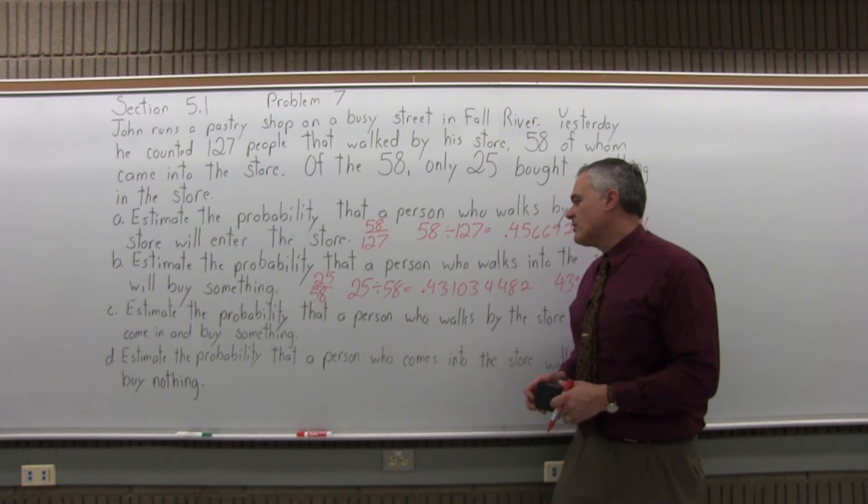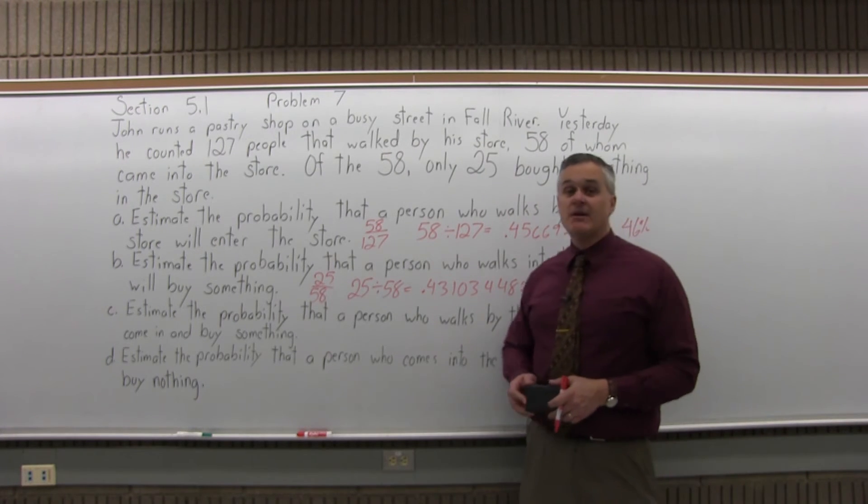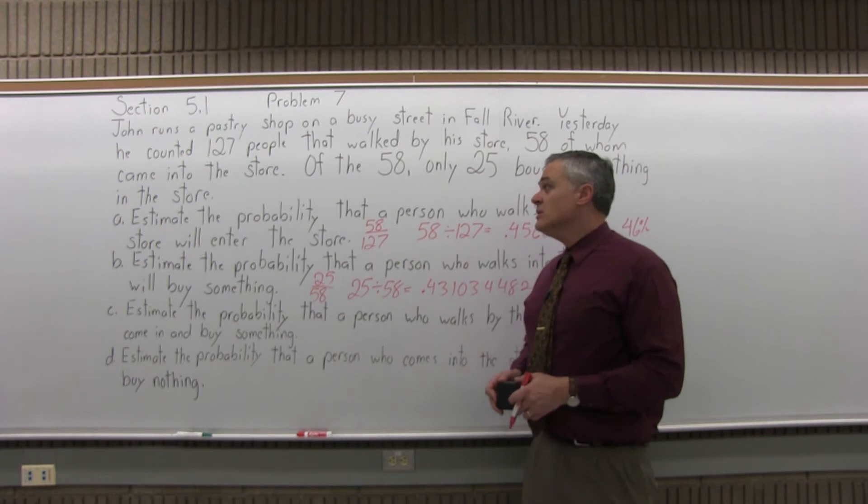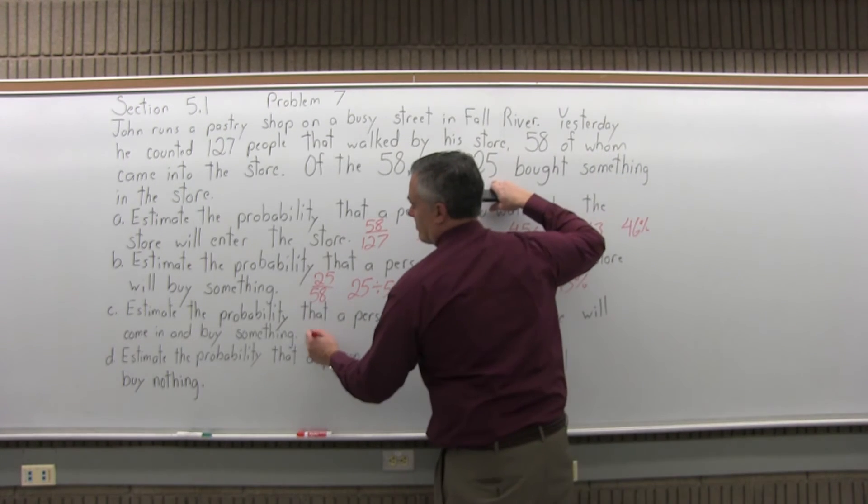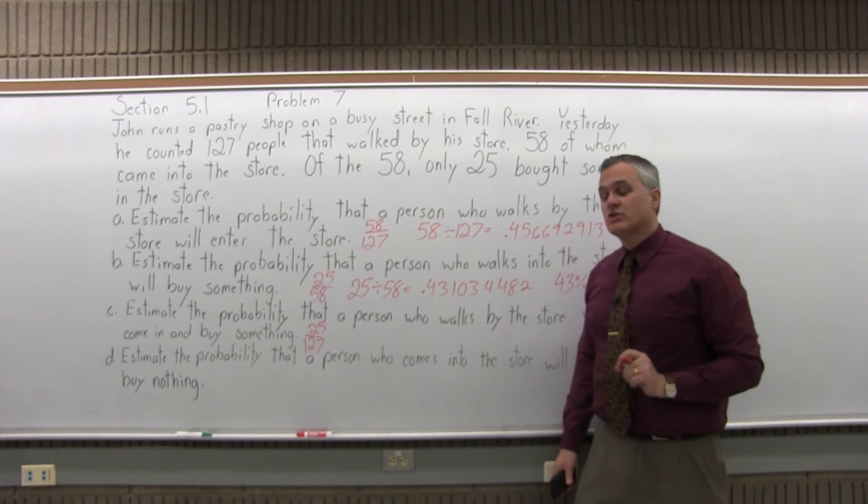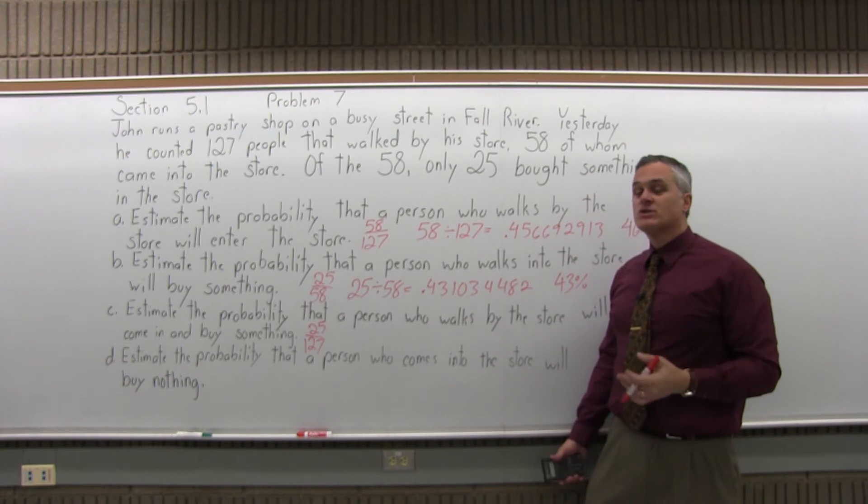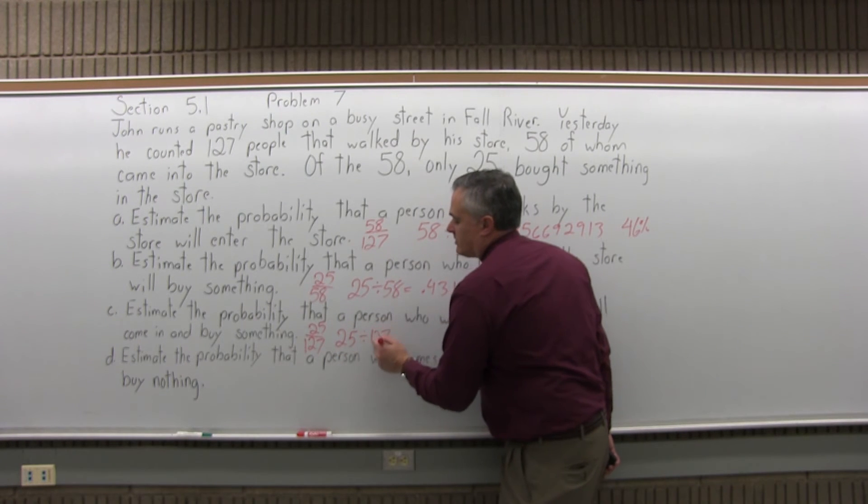Part C: estimate the probability that a person who walks by the store will come in and buy something. You had 25 people who came in and bought something out of 127 that walked by. So 25 over 127, which also doesn't reduce but can be turned into a decimal. 25 divided by 127